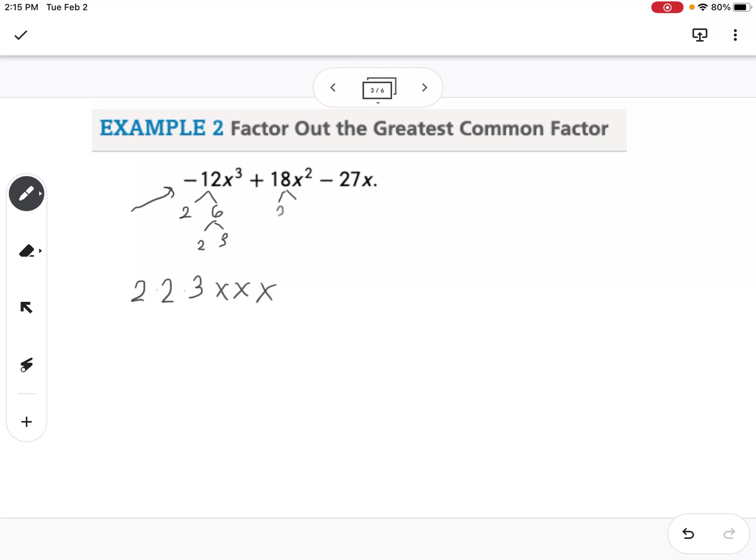18 is 2 times 9, and 9 is 3 times 3, so that means I have 2 times 3 times 3, and 2 x's. And then 27 is 3 times 3 times 3 times 3, and 1x.